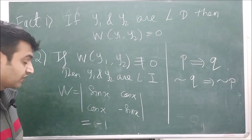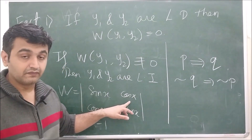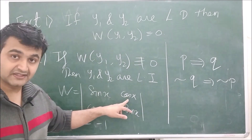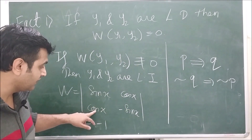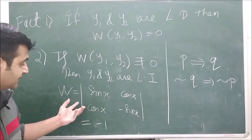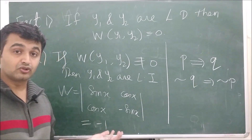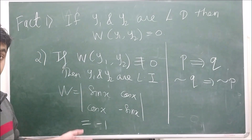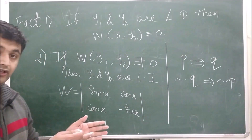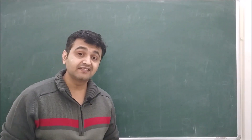Similarly for x and x²: the Wronskian matrix is [[x, x²],[1, 2x]], giving determinant 2x² − x² = x², which is non-zero over ℝ \ {0} (i.e., (−∞, 0) ∪ (0, ∞)), confirming they are linearly independent there.